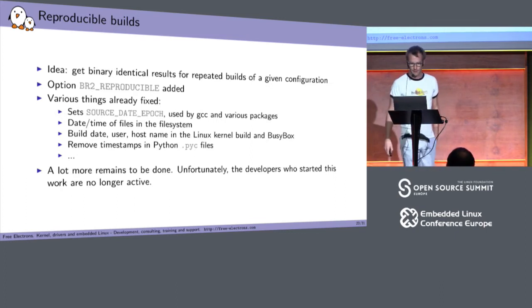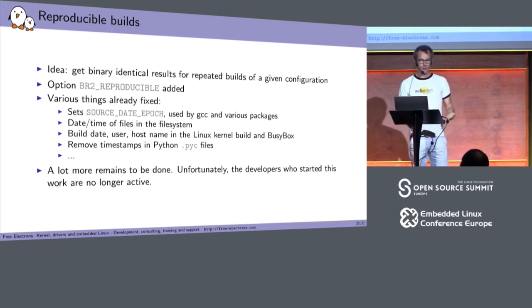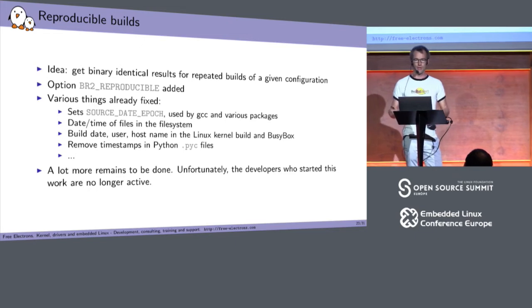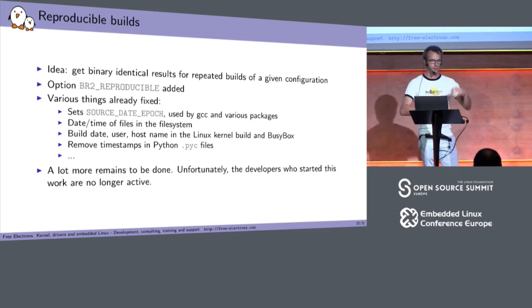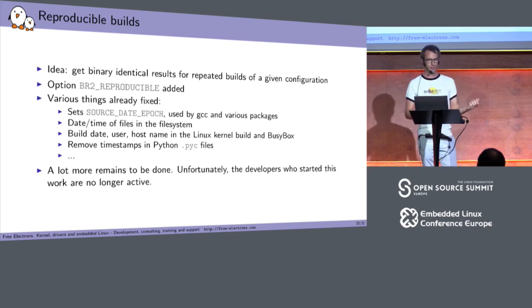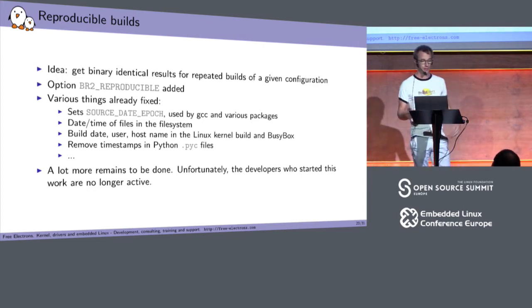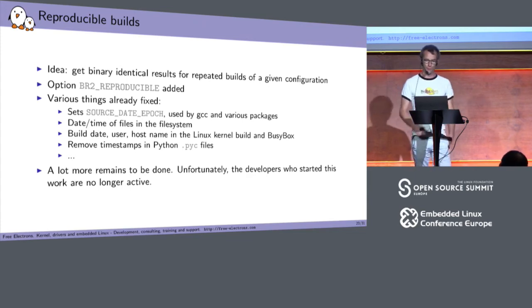Reproducible build support was added. The idea is to make two builds of the same configuration and get binary-identical results. It's only the beginning — making sure timestamps don't creep into binaries and that the order of files is always the same. We're far from something complete that will always generate a reproducible build, but it's the first step and we very much welcome additional contributions in this area. The developers who started this effort are no longer active, so there's room for improvement.